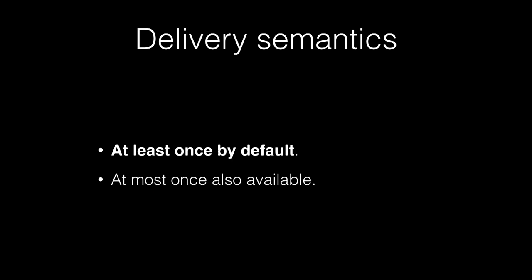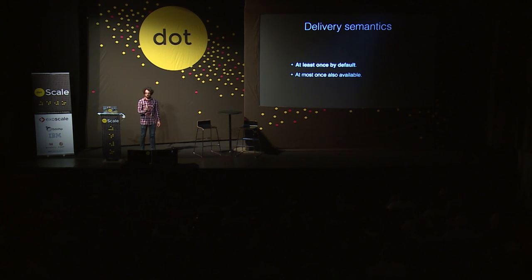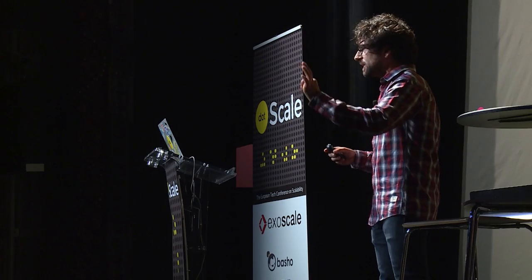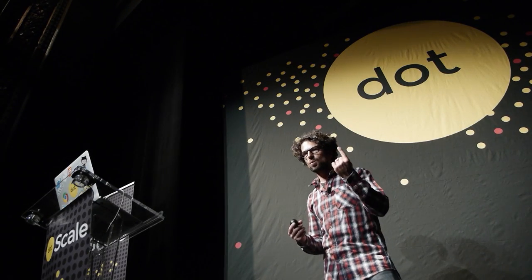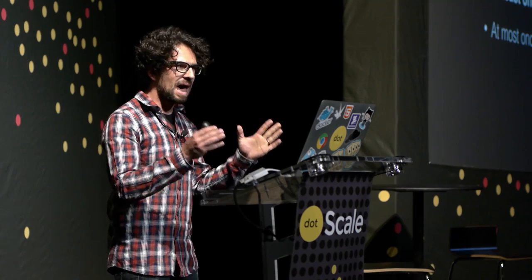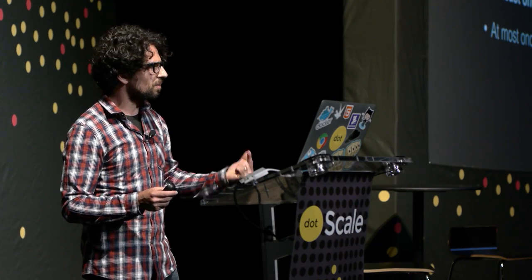This is called at-least-once delivery semantics — a message can be delivered from one to an infinite number of times, but never zero times, because if not explicitly acknowledged it will be delivered again and again forever. However, Disque is also able to provide at-most-once delivery: messages are delivered zero or one time. If the worker loses the message, it won't be re-delivered. At-least-once with idempotent processing gives you reliable messaging. At-most-once can be useful for things like updating a progress bar in a client view, where reliability is not needed.